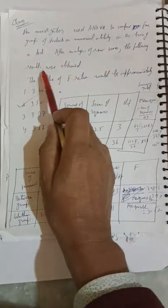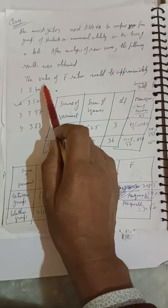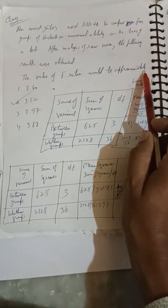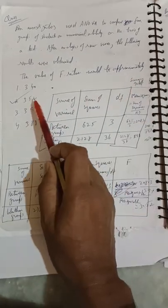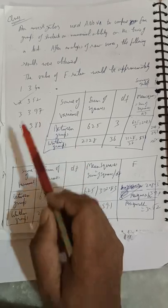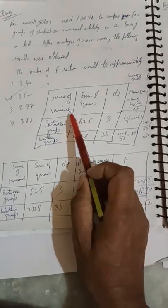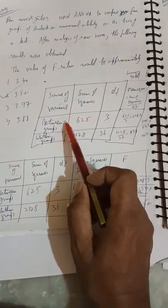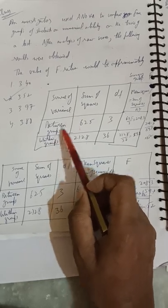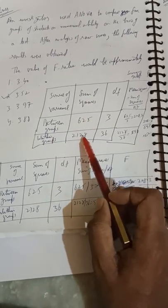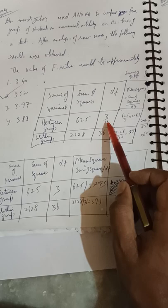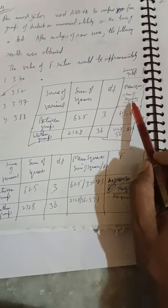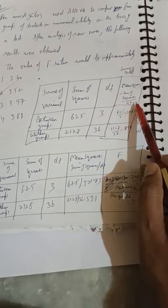The value of F-ratio would be approximately: 3.40, 3.52, 3.97, or 3.18. Given: source of variance between groups and within groups, sum of squares 625 and 2128, degrees of freedom 3 and 36.